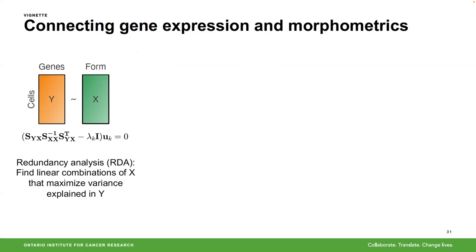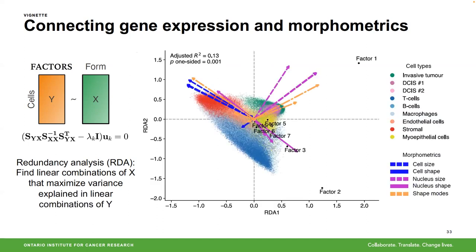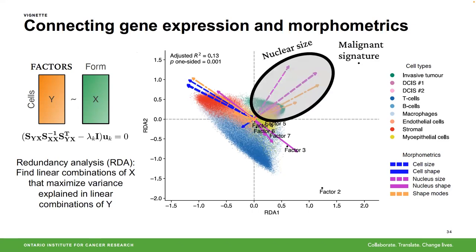For the redundancy analysis, we computed gene expression factors first to avoid worrying too much about dropout. What you get out are factors representing gene expression, with arrows representing morphometric descriptors — if a factor and an arrow have a close angle they are highly correlated. You capture things you'd expect: nuclear size descriptors correlate strongly with malignancy. That's the kind of analysis you can do connecting in situ sequencing to morphometrics.